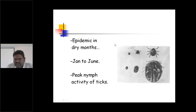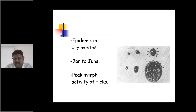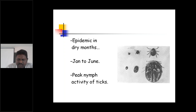Epidemics of this disease occur during the dry months, especially from January to June. Epidemics are more common in this period because it is a forest-related disease. People go into the forest before the rains — they may be woodcutters or cattle herders.